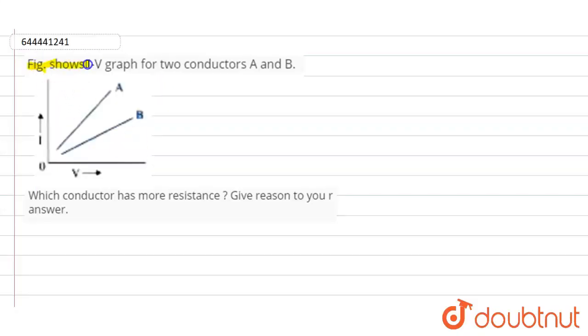It is given that the figure shows a graph drawn between V and I for two conductors A and B. Which conductor has more resistance? Give reason to your answer.